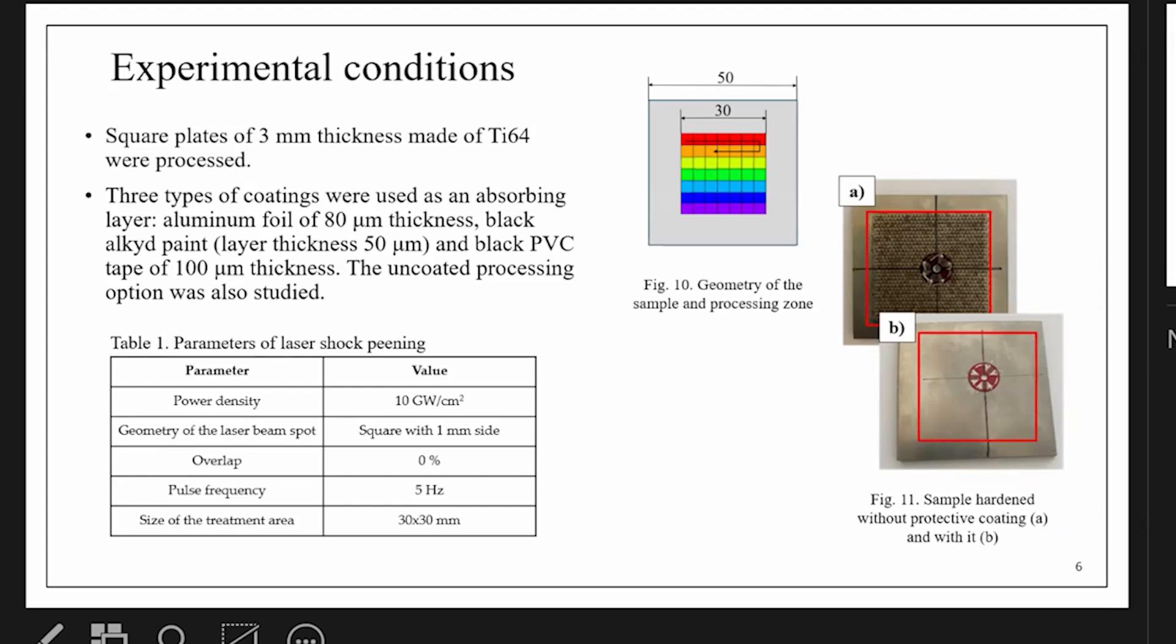I will only mention here that we have chosen the power density based on our experience with this titanium alloy. In our opinion, 10 gigawatts per centimeter squared is the optimum value for this material, with the increase of which we didn't see a significant increase in the effect of laser shock peening.